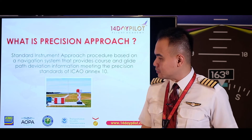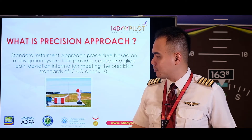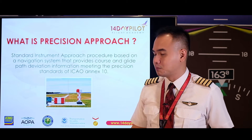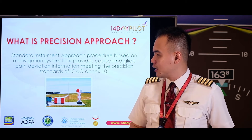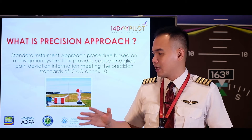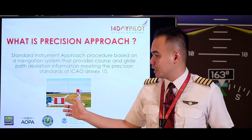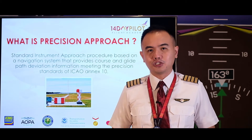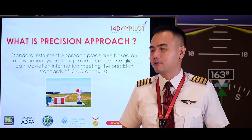Here you can see one of the glide path information devices — the glide slope device at the airport. If you're flying and you can see this kind of station, it means that airport has precision approach facilities.